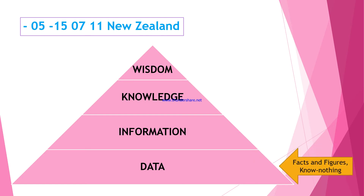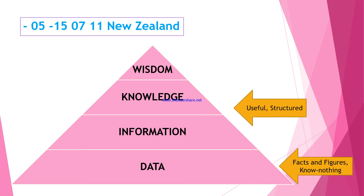Data is nothing but facts and figures from which we do not know anything without context. For example, looking at this example on screen: minus 05, minus 15, 07, 11, and New Zealand are written. This is data generated from some resource. By looking at these raw facts and figures, I will not understand anything because there is no context or meaning related to it — I don't know the structure of this data.